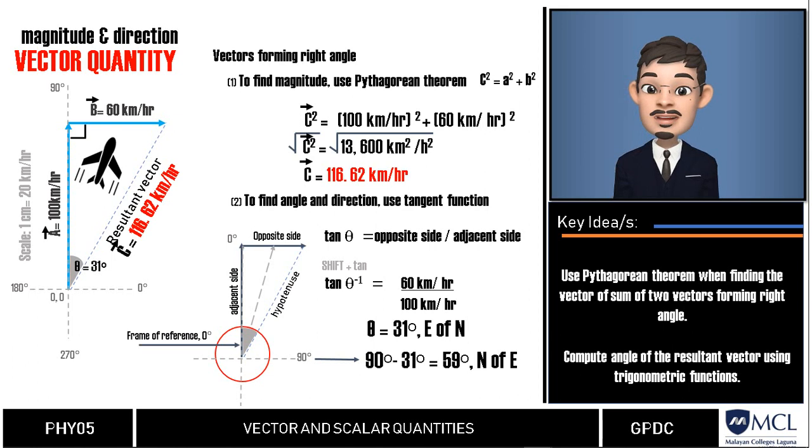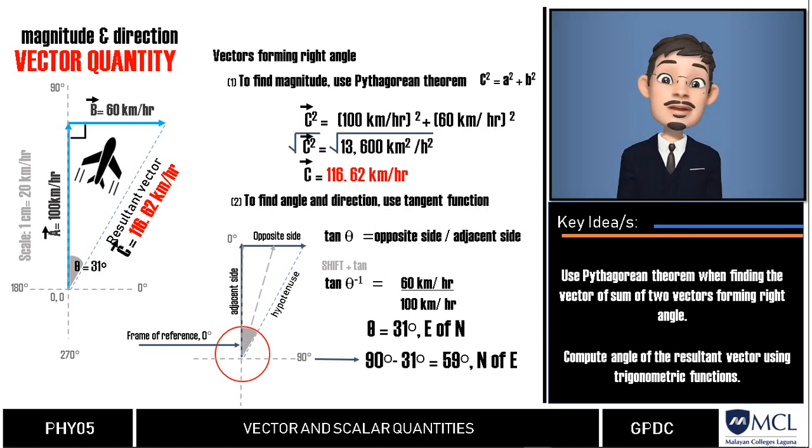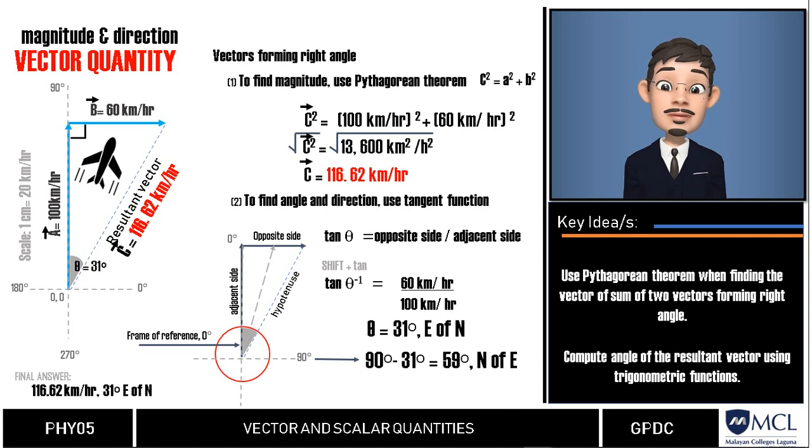And here, if we choose east as our frame of reference, the airplane's final vector would be 116.62 km per hour, 59 degrees north of east.